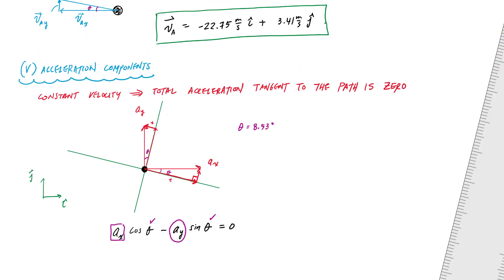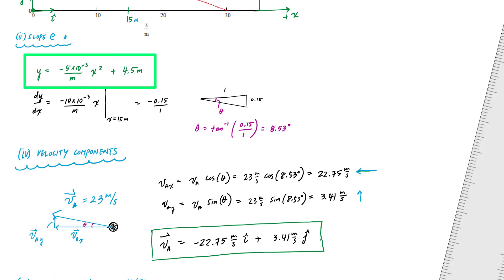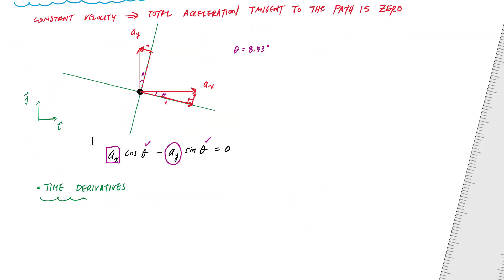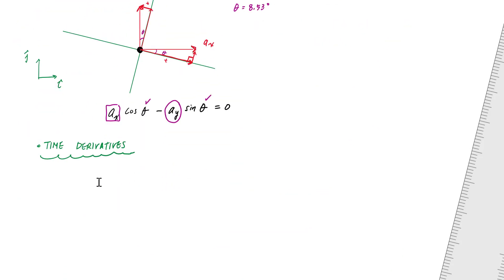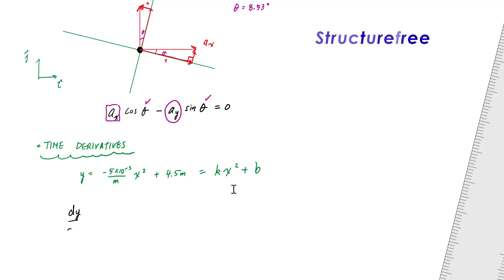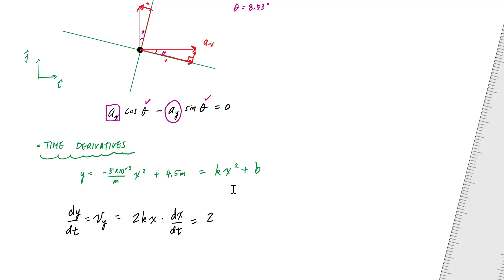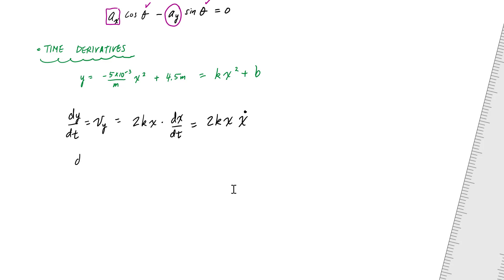To get a second equation, instead of taking a spatial derivative of the path equation, I take derivatives with respect to time. Starting with y equals kx squared plus b, taking the time derivative gives vy equals dy/dt equals 2kx times x-dot, which is the same as 2k times x times vx.